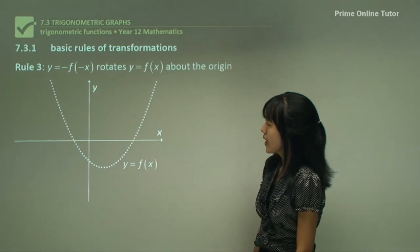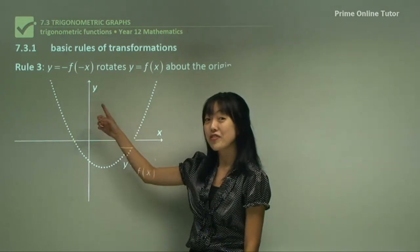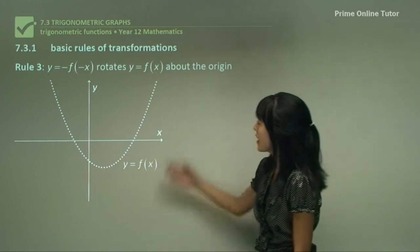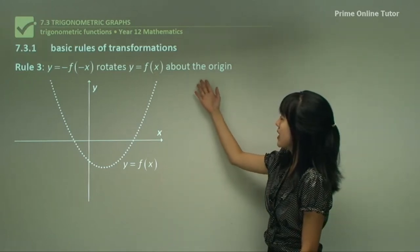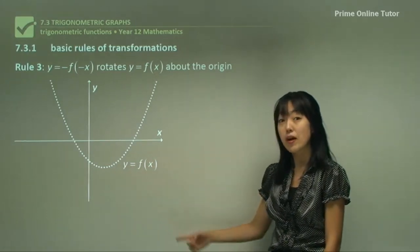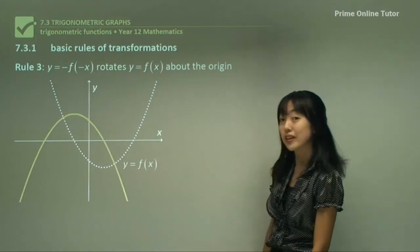Rule three is negative f of negative x. Here it says that it would be rotated, so f of x would be rotated about the origin. It would look something like this.